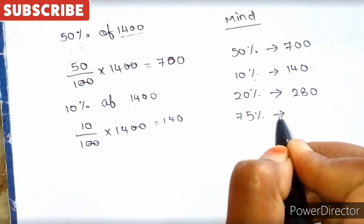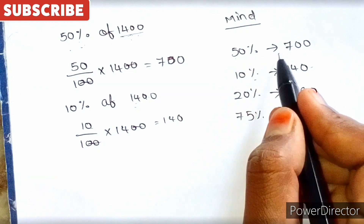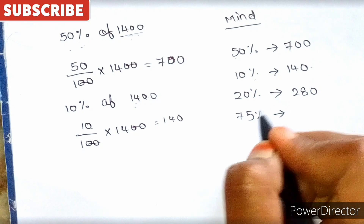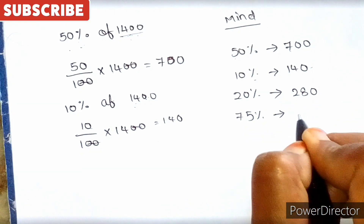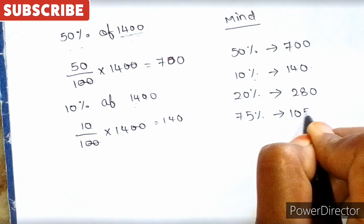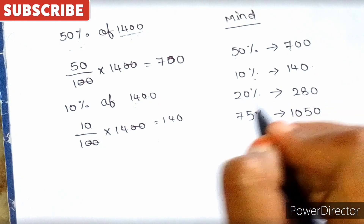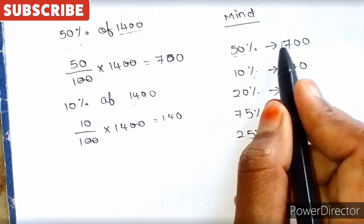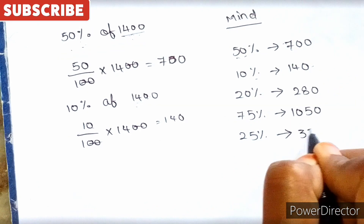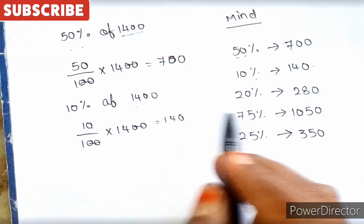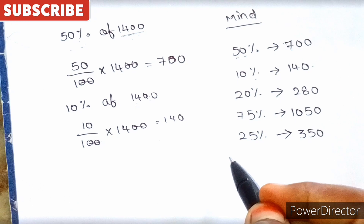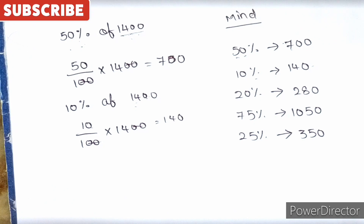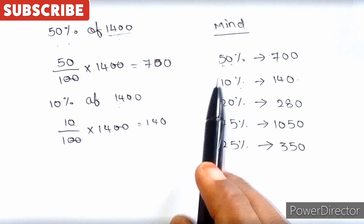Now, 75% of 1400 using mind calculation: break it as 50% + 25%. 50% is 700. 25% is half of 50%, which is 350. So 75% = 700 + 350 = 1050. This way, without pen and paper, we can solve problems easily using mental math.